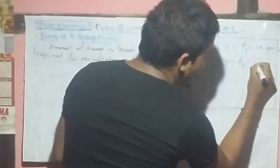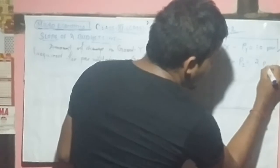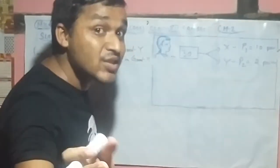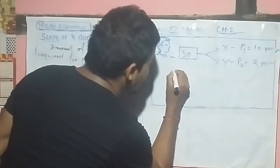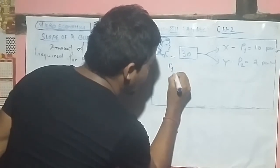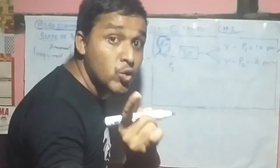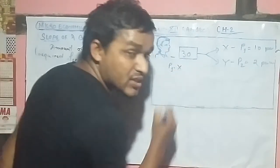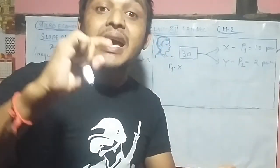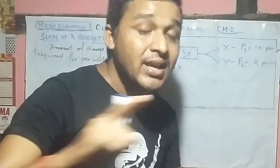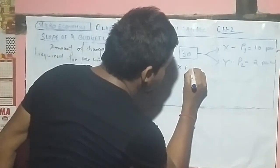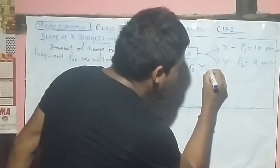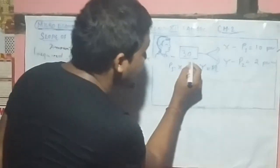The price of Good Y is p2 equal to 2 rupees per unit. Now if I write the budget equation — the combination of X and Y that he can purchase — it will be: p1 times X, where p1 is the price of Good X per unit and X is the quantity of X, plus p2 times Y, where p2 is the price of Y per unit and Y is the quantity of Y, equal to M, his money income of 30 rupees.